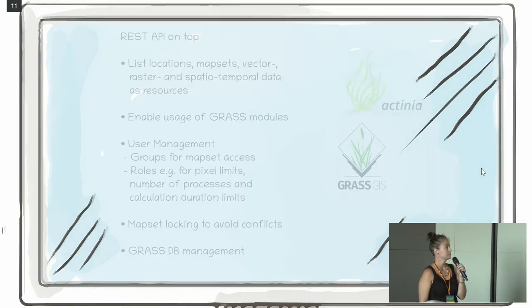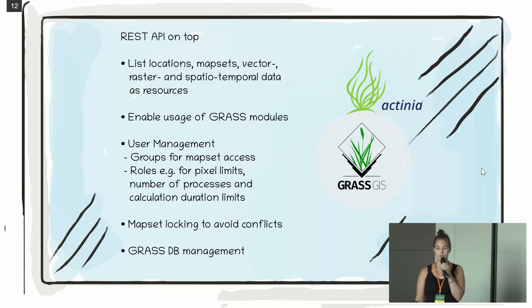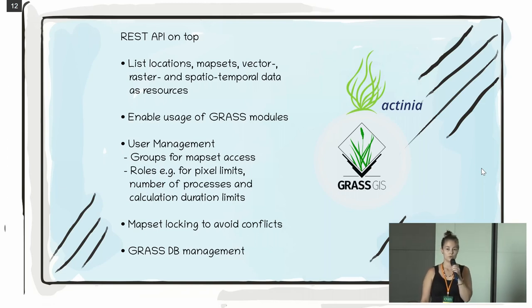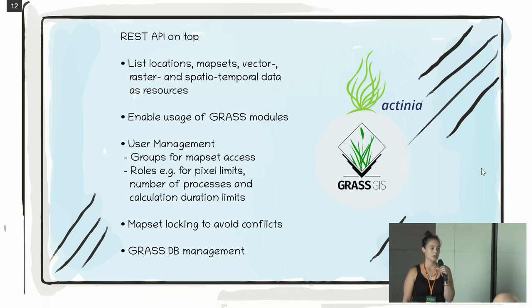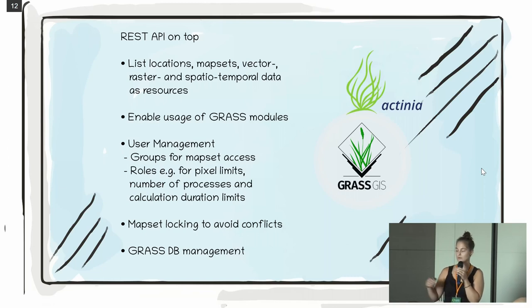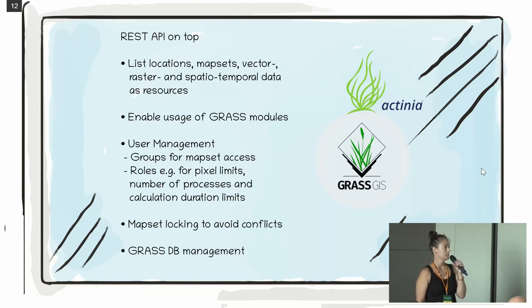How can we bring this into the cloud? We can build a REST API on top of GRASS GIS and exploit the locations and mapsets as resources. We need to enable the usage of all the GRASS modules. And because we are working on the web, it's good to have user management so you can sign in, and not everyone can access large processing because it costs money to set it up. It's also important to think on a larger scale — GRASS GIS was set up in clusters before, and in the cloud we have the same problem when multiple users want to access the same data, potentially causing concurrency. So we need to implement a locking system and think about the GRASSDB management itself.